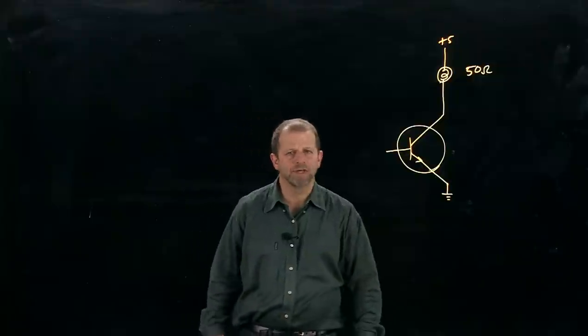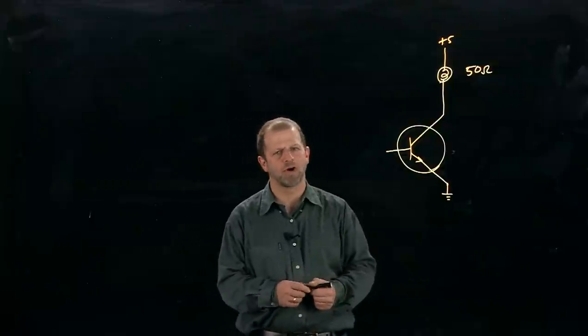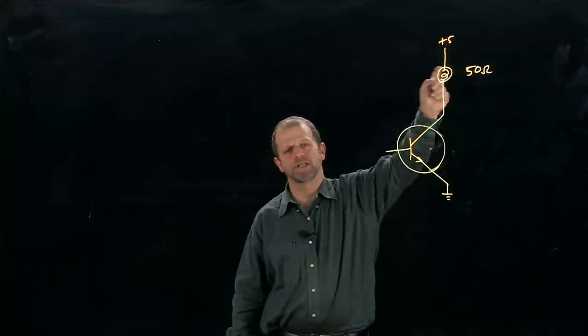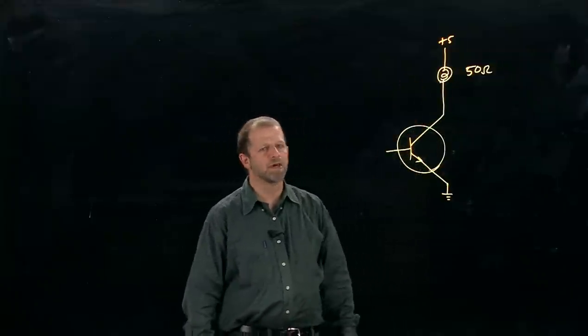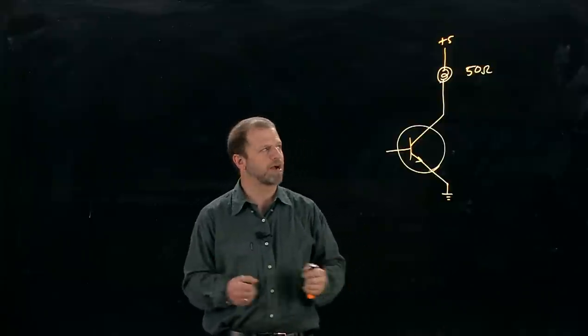Transistors as switches. Often you want to use a transistor in a way in which it is either all on or all off. What I've shown here is an NPN transistor and here's a light bulb. That's a symbol for an incandescent light bulb, and we're going to say that's a 50 ohm light bulb and it's supposed to operate on five volts.